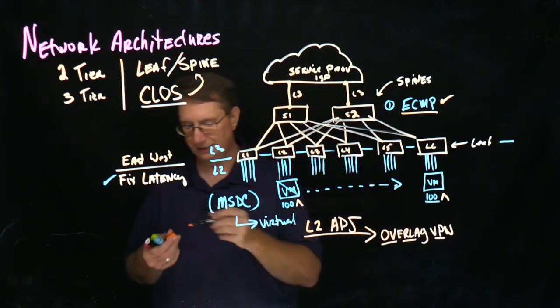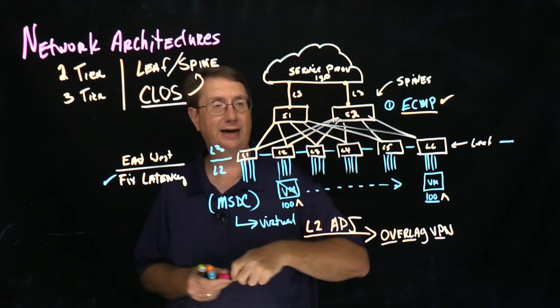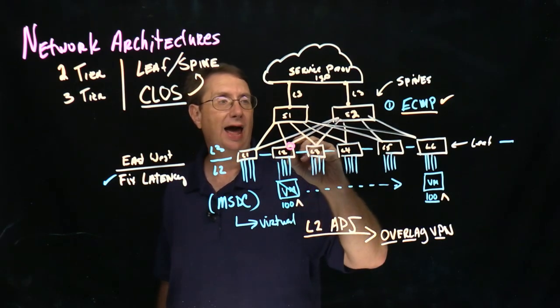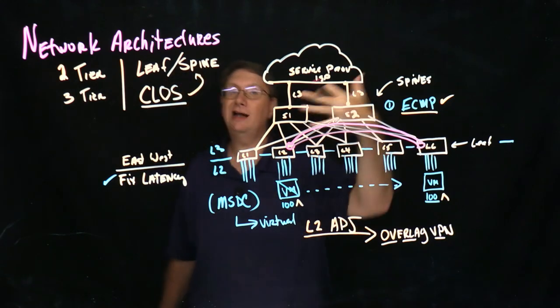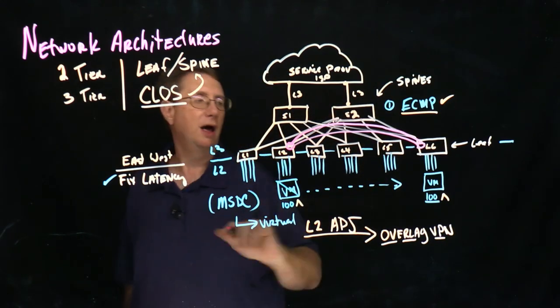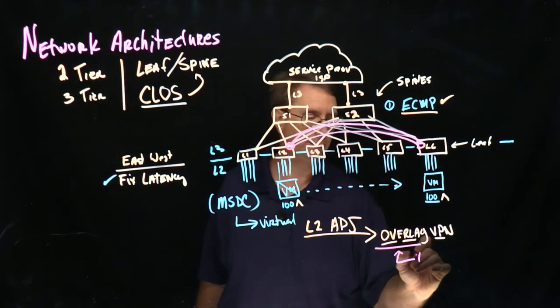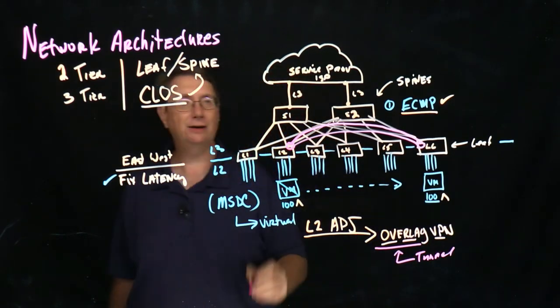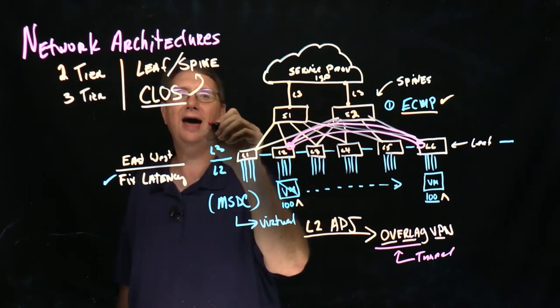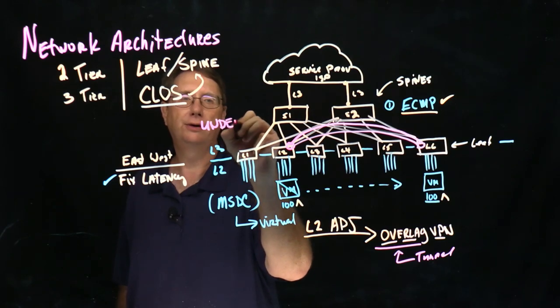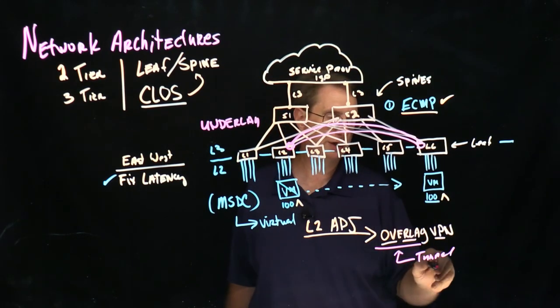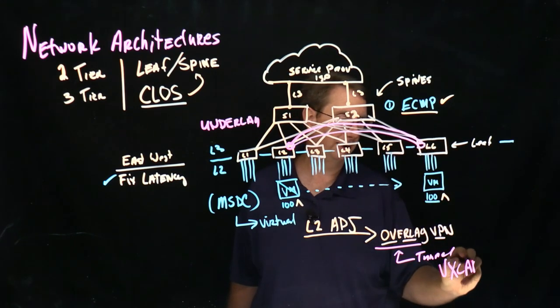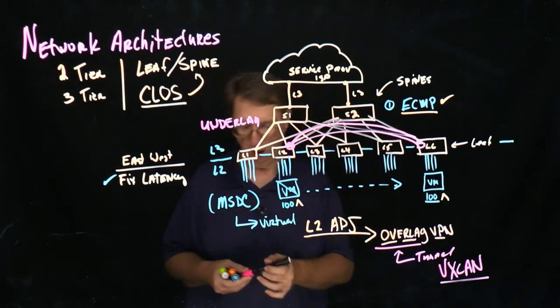So what we're going to basically do in this scenario is if I want to maintain layer two connectivity, I have to create a layer two tunnel that's going to run between the leaves on top of the layer three infrastructure. The overlay is what we call this tunnel. And it runs on top of the layer three infrastructure, which we have a habit of calling the underlay. Technologies that support this, probably the most common are going to be solutions in this scenario would be a virtual extensible local area network, which we're going to be studying in the DCICT portion of this course.